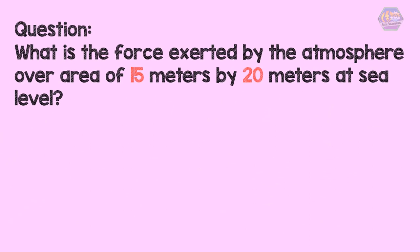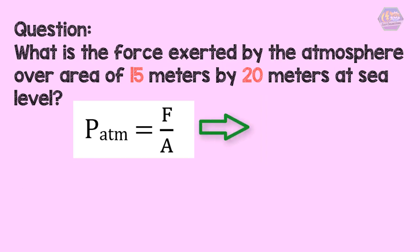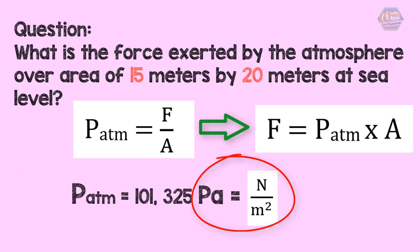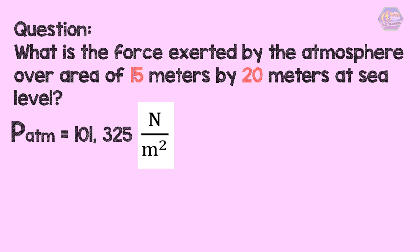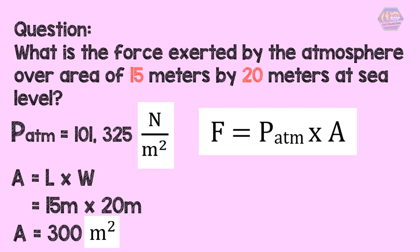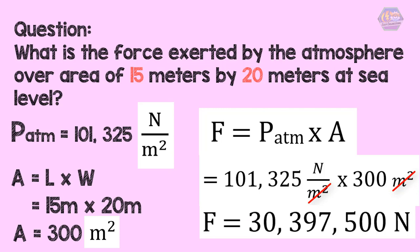Let's solve this problem: what is the force exerted by the atmosphere over an area of 15 meters by 20 meters at sea level? Recalling that pressure equals force divided by area, we derive that force equals atmospheric pressure times area. The standard atmospheric pressure is 101,325 pascals, or 101,325 newtons per square meter. The area is 15 × 20 = 300 square meters. Therefore, the force equals 30,397,500 newtons — this is the weight of the air above that surface.